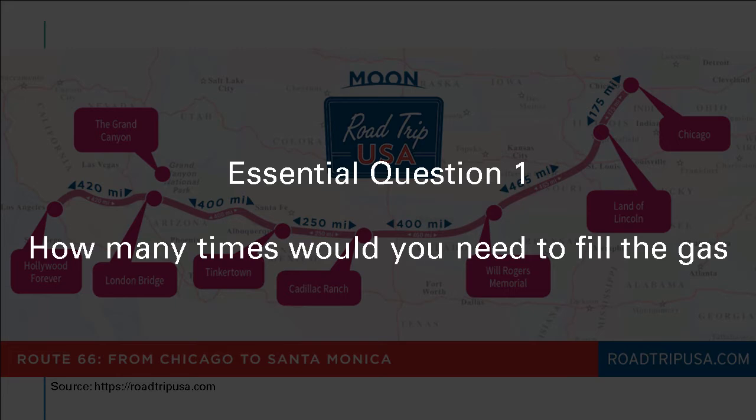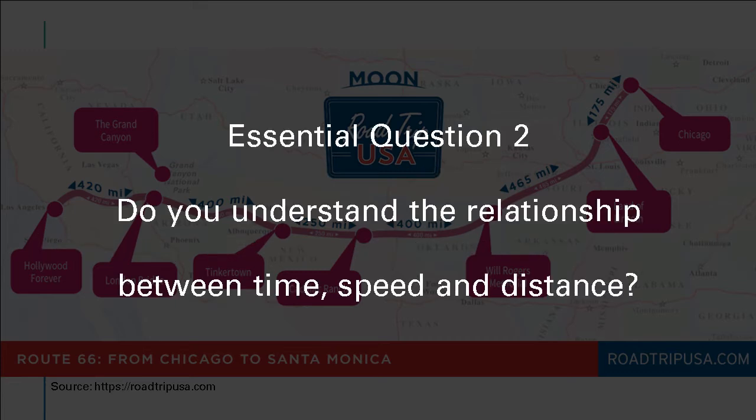How many times would you have to stop to refuel on the way? To answer this question, we need more information, such as the distance between the two cities, the average speed of the car, and how much gas the tank can hold. Not only that, we have to understand the relationship between time, speed, and distance. Understanding the relationship between different variables is the core concept behind the idea of a function.